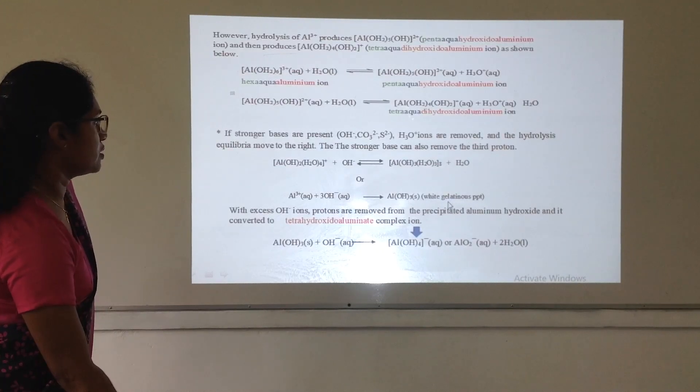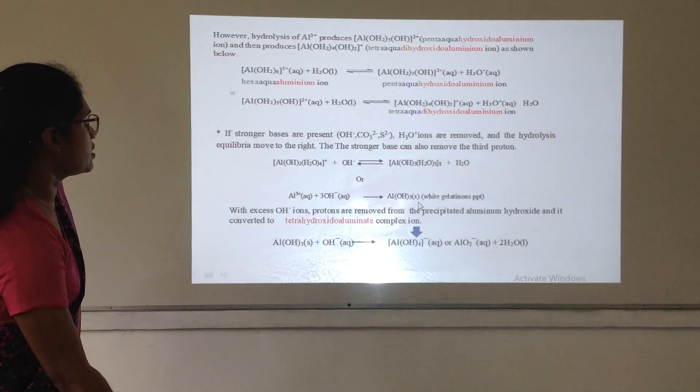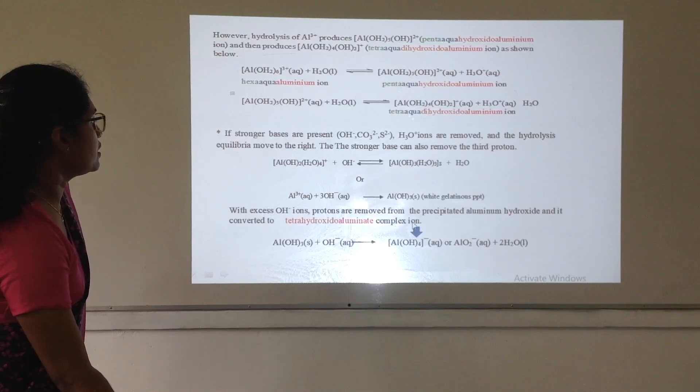if another proton is removed this tetra-aqua-di-hydroxyl-aluminium ion turns to aluminium hydroxide and it is white gelatinous precipitate and we can see that because it is a precipitate. With excess hydroxyl ions, again another proton can be removed from this precipitate and this tetra-hydroxyl-aluminium complex ion is formed. This one is not a precipitate, this precipitate dissolves again and forms this complex ion.